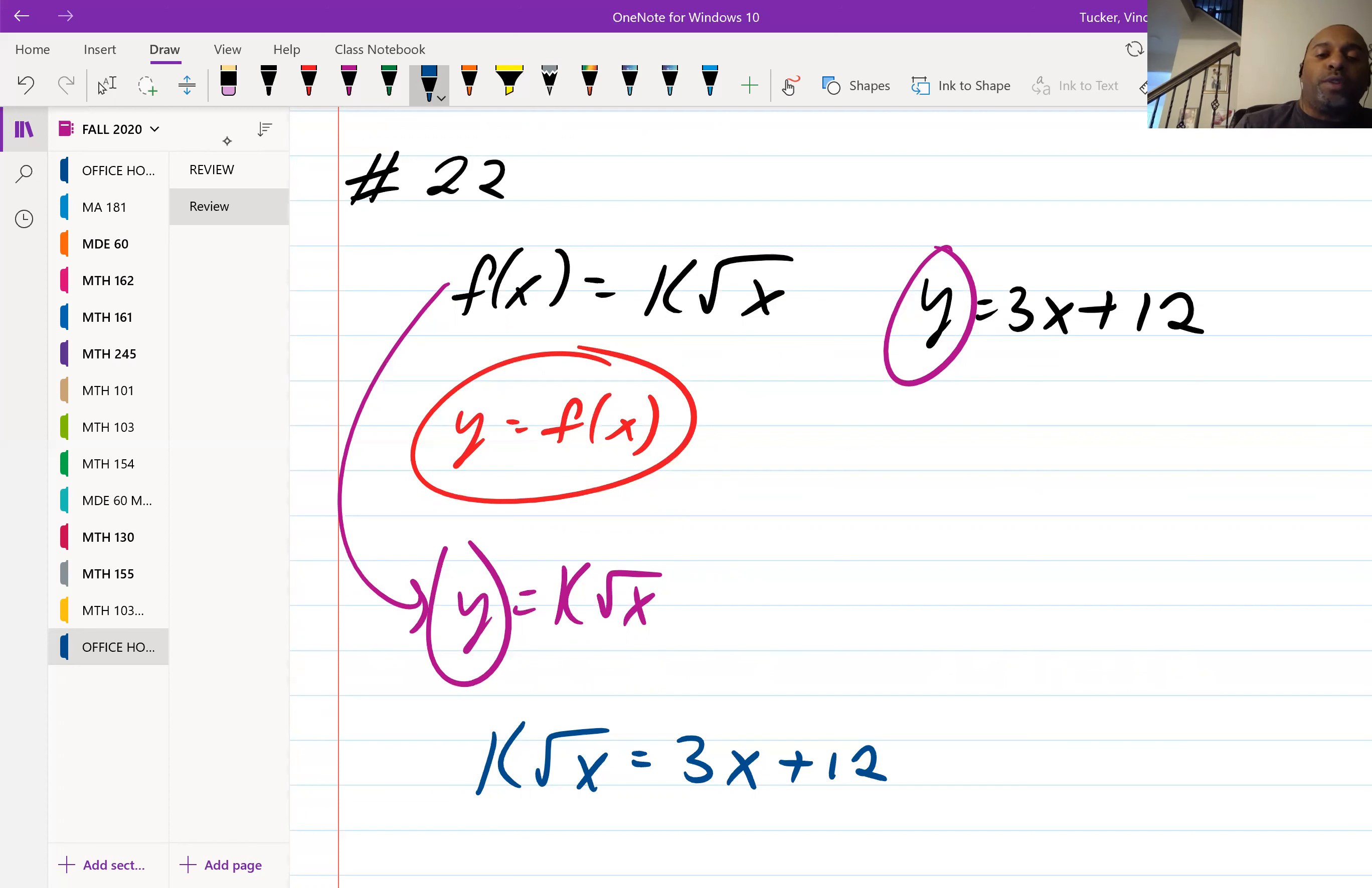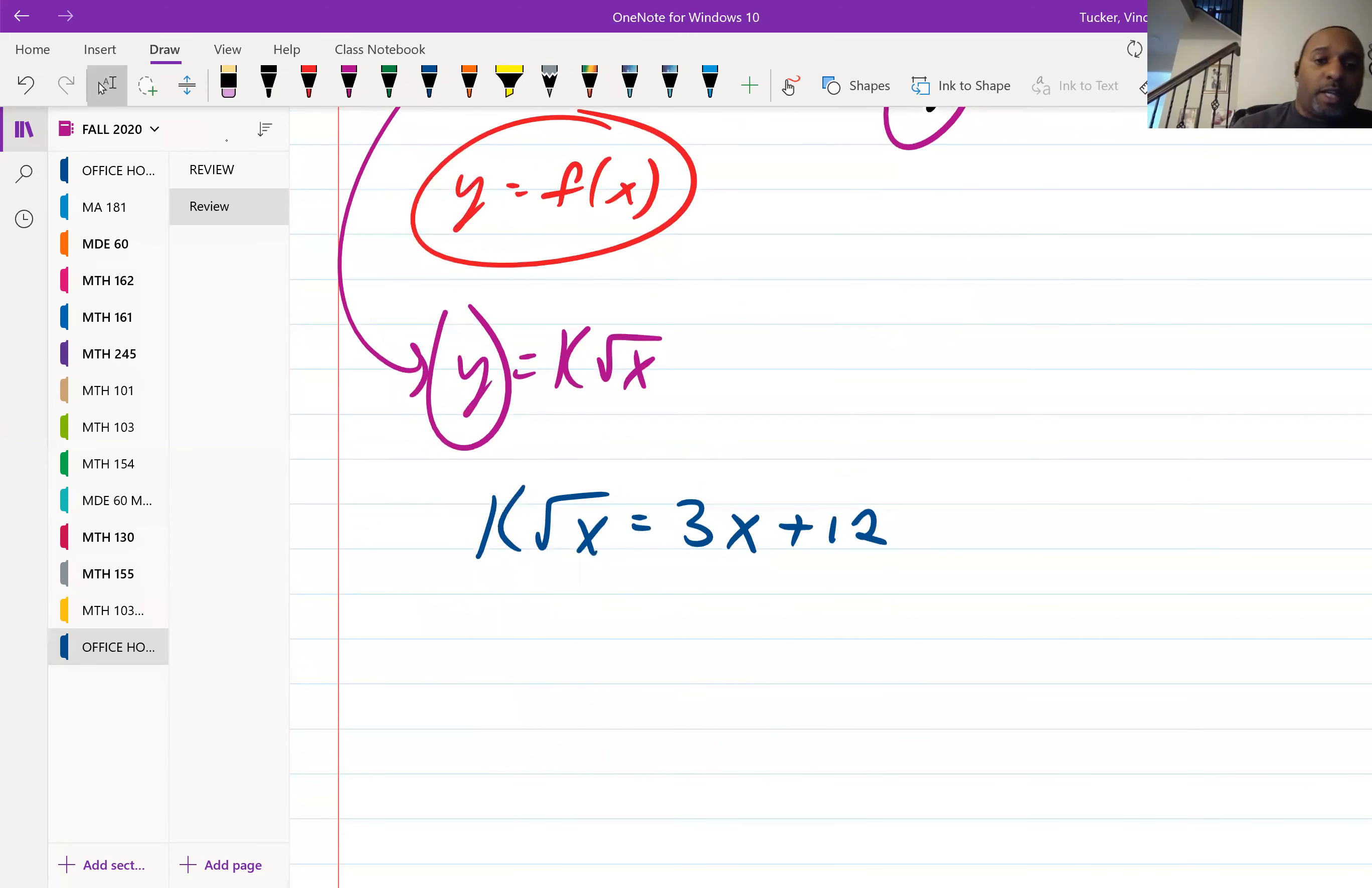So if I were to take the derivatives of both sides, it means the derivatives are equal to each other as well. Taking the derivative of this right side, of course, is just going to be 3. Taking the derivative of this left side, we go back to the idea that that's x to the one-half. Bring the one-half down, subtract one from it.